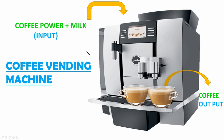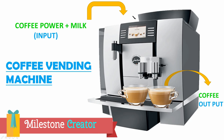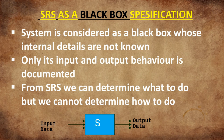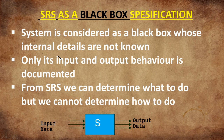So if you are asked the question — why is SRS a black box specification — then you will say: SRS is a black box specification because the system is considered as a black box whose internal details are not known. The internal working of the software is not known to us. Only its input and output behavior is documented, which we call SRS.